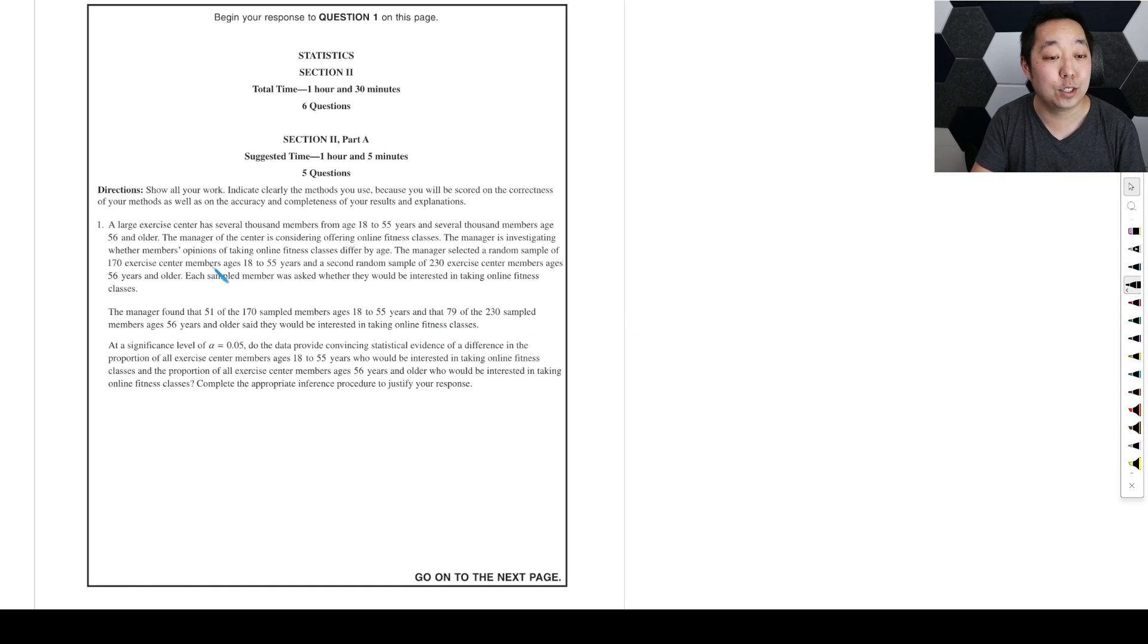I only skimmed some of the questions, but we'll just kind of go through this. So we have this exercise center has several thousand members, range from 18 to 55, and several thousand members age 56 and older. The manager is investigating whether members' opinions of taking online fitness classes differ by age. A random sample of 170 ages 18 to 55 and a random sample of 230 ages 56 and older. Manager found 51 of the 170 and 79 of the 230 would be interested in taking online fitness classes.